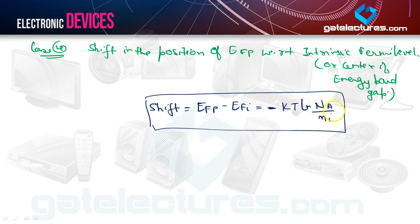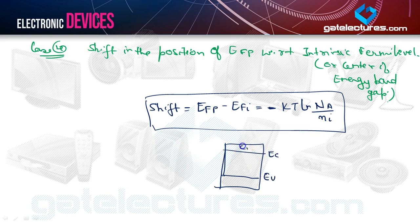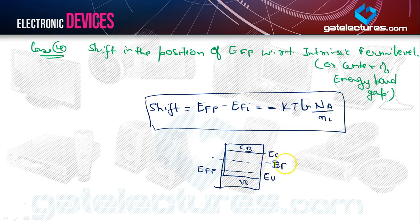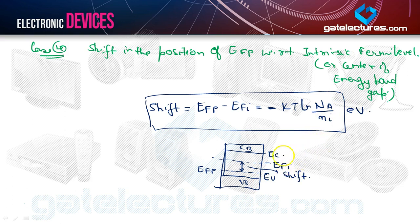The shift is negative: minus kT times ln(N_A / n_i). In the band diagram showing E_V (valence band) and E_C (conduction band), E_FP lies below E_Fi, and this gap is the shift. This result is in electron volts and you should be well versed with these concepts.